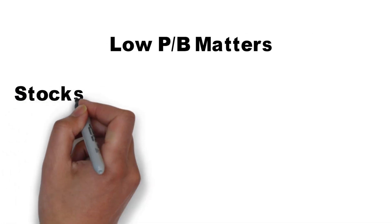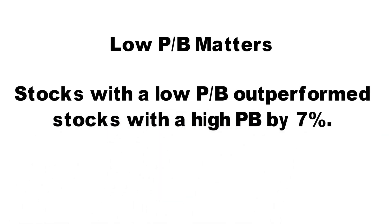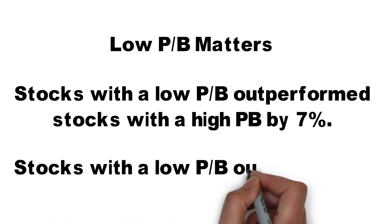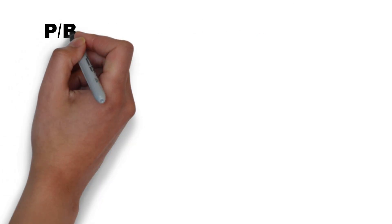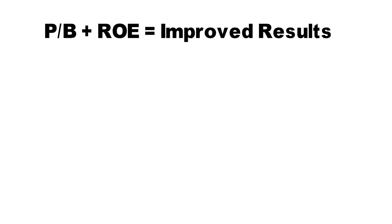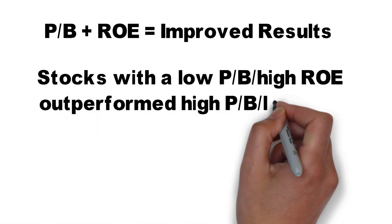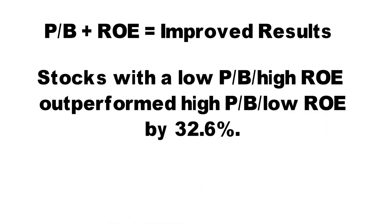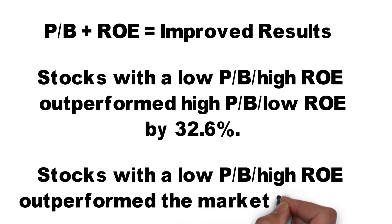Despite these cons, Barclays backtesting found that stocks with a low price to book outperform stocks with a high price to book by 7% annualized over 10 years. Stocks with a low price to book also returned 2.7% more than the market over the same period. However, price to book screens might identify companies with a low return on equity. To avoid this, invest in companies with a low price to book and a high return on equity. Barclays found that combining these two filters resulted in excess annualized returns of 32.6% over the high price to book and low ROE screen, with a 13.6% outperformance against the market.